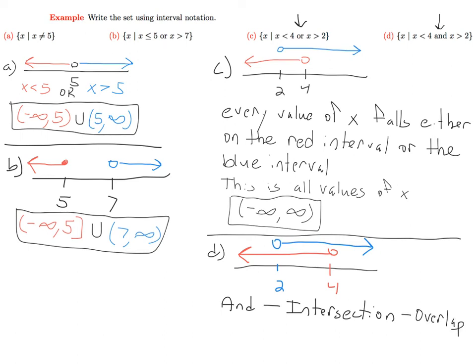So that would be this region right here. This is going to be all values that are strictly bigger than 2 and strictly less than 4.